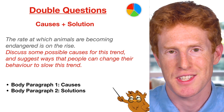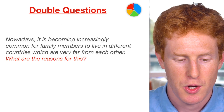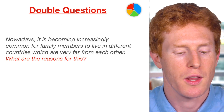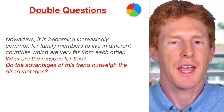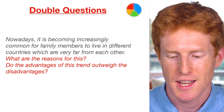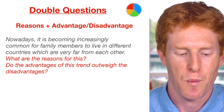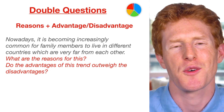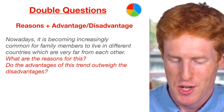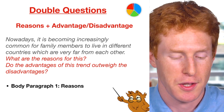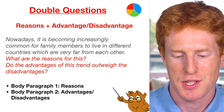There are yet more double question types. For example: 'Nowadays it's becoming increasingly common for family members to live in different countries very far from each other. What are the reasons for this? Do the advantages of this trend outweigh the disadvantages?' Again we have two separate questions — the first looks at the reasons, and the second asks us to evaluate whether the advantages outweigh the disadvantages. It's quite a tricky question to answer in 40 minutes. Body paragraph one identifies the reasons and body paragraph two discusses whether advantages or disadvantages are greater.